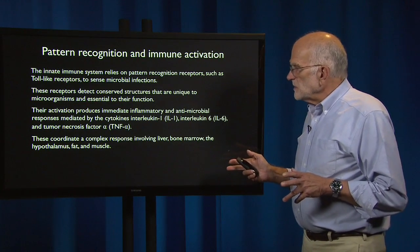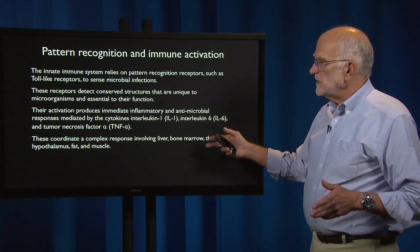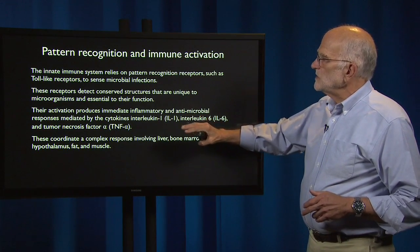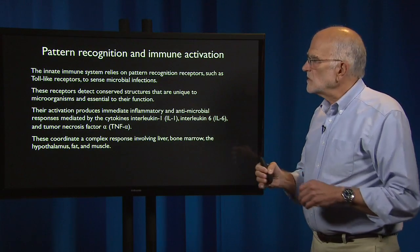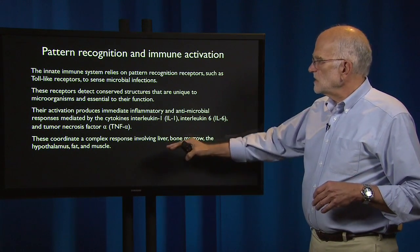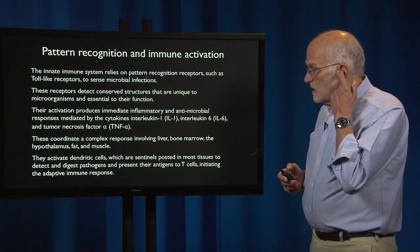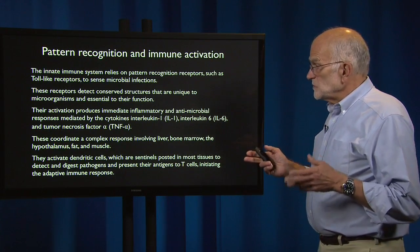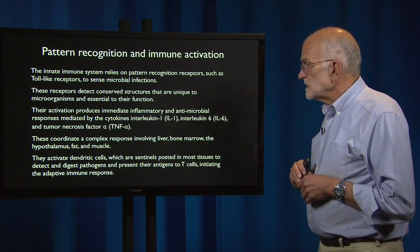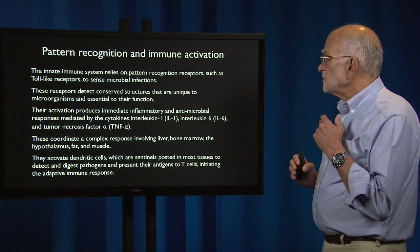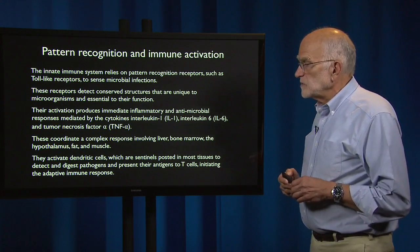These cytokines coordinate a complex response that involves the liver, bone marrow, the hypothalamus, fat, and muscle. So although the immediate language is molecular and cellular, the response being coordinated covers the whole body and major organ systems. They also activate dendritic cells, which are sentinels posted in most tissues to detect and digest pathogens. Dendritic cells then present their antigens to T cells, initiating the adaptive immune response.